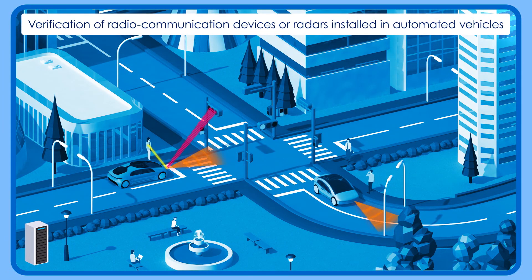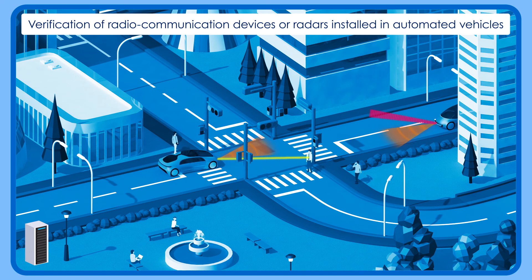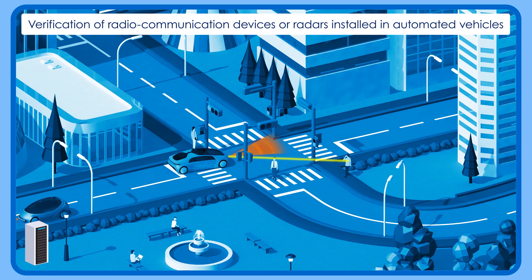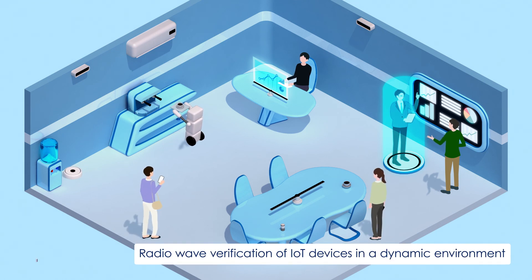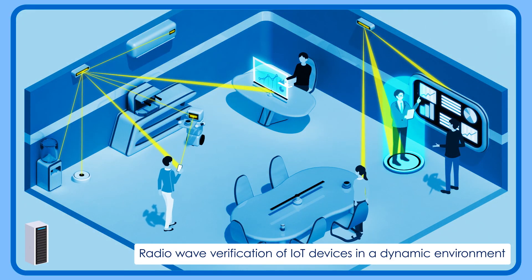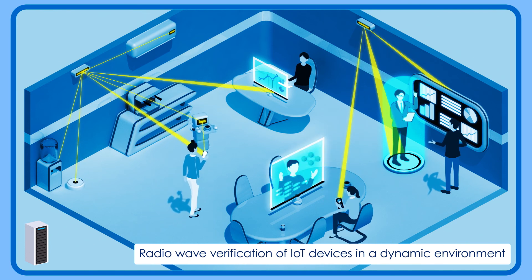For example, the wireless emulator can verify radio communication devices or radars installed in automated vehicles that require precision performance without delay. In offices where various wireless devices are used, it can conduct verification taking into account the movements of people and robots, or the communication capability of wireless devices.